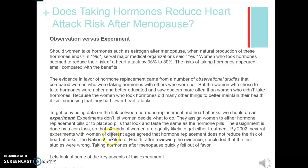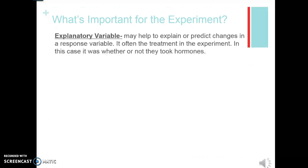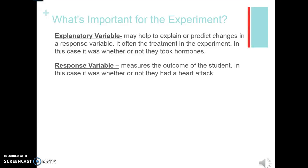By 2002, several experiments with women of different ages agreed that hormone replacement does not reduce the risk of heart attacks. When they did the experiment, it overturned their conclusions from the observation. Now let's look at the important aspects of this experiment. Number one: the explanatory variable. It helps to explain or predict changes in a response variable — it's often the treatment. In this case, it was whether or not they took hormones. The response variable is what happens based on the explanatory variable — in this case, whether or not they had a heart attack.